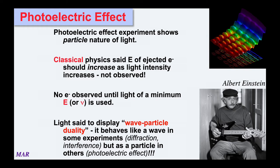Light is said to display wave-particle duality — it behaves like waves in diffraction and interference, but sometimes like particles in the photoelectric effect. This totally blew scientists' minds. Einstein was the first to crack that open. Light can be broken down into discrete particles called photons, each with discrete energy. So 'quanta' is basically an early name for what we now call a photon.